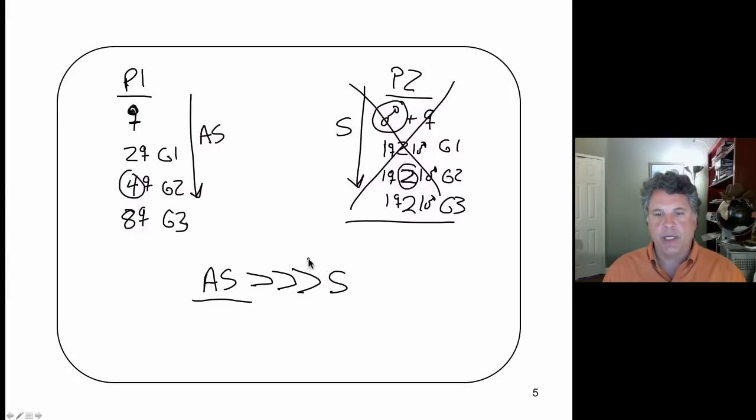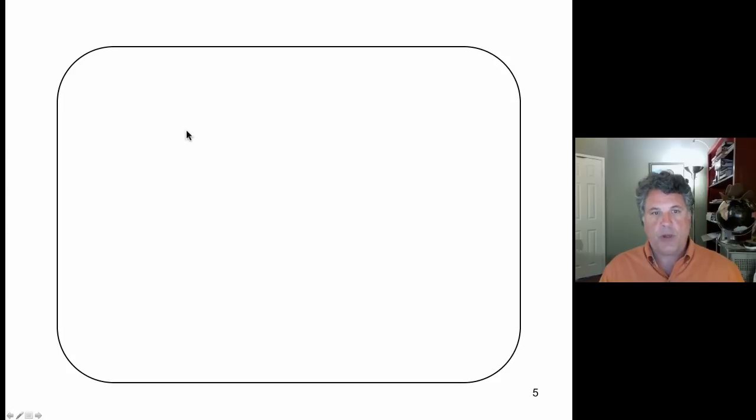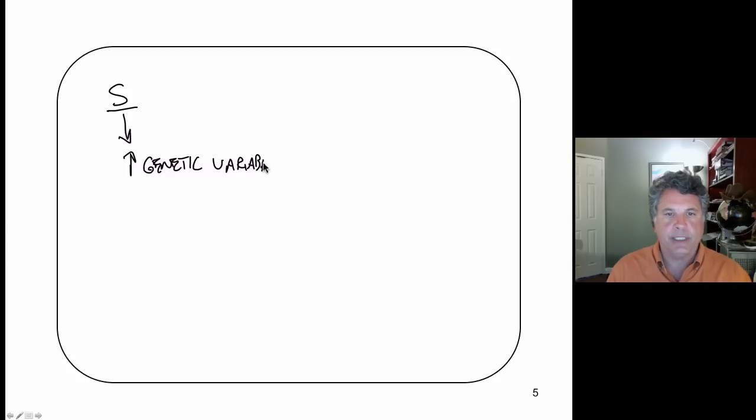Therefore asexually reproducing organisms should wipe out sexually reproducing organisms. So what is the advantage to sexual reproduction? What have been the selection pressures that have given rise to sexual reproduction? The best answer that evolutionary biologists and theorists have come up with is that what sexual reproduction does is it increases genetic variability. And we'll see why that is true as we proceed in our treatment of genetic variability.